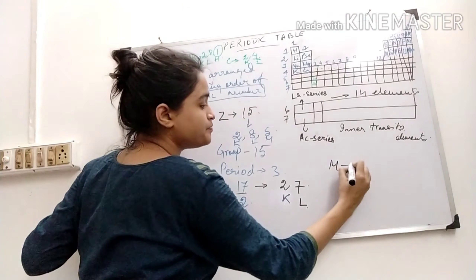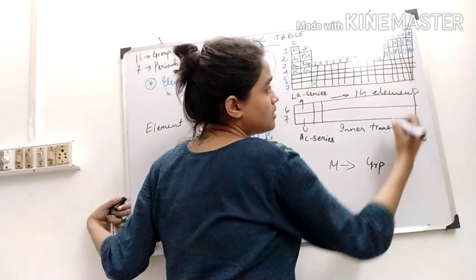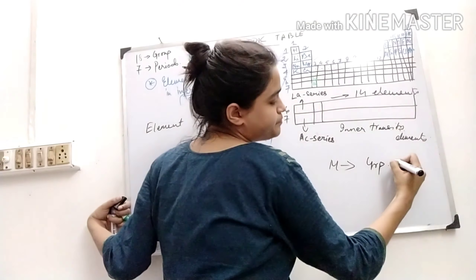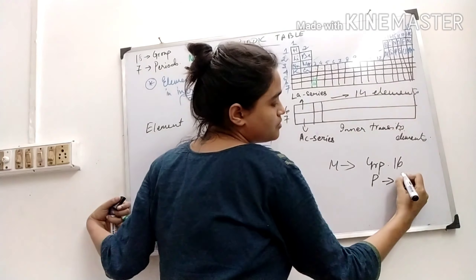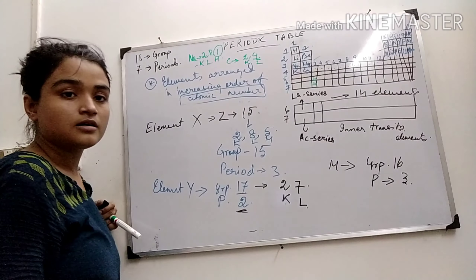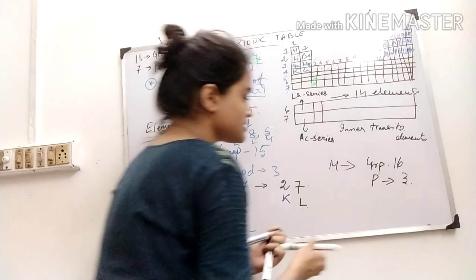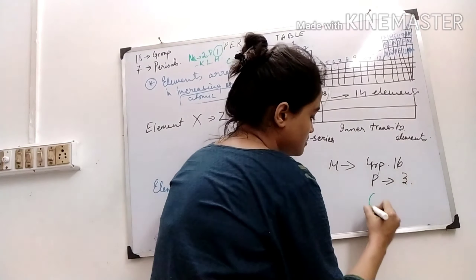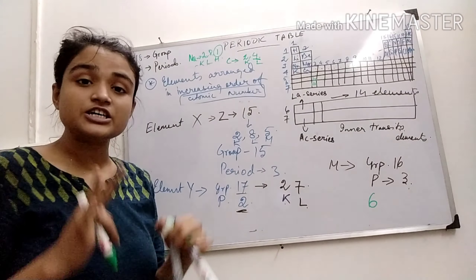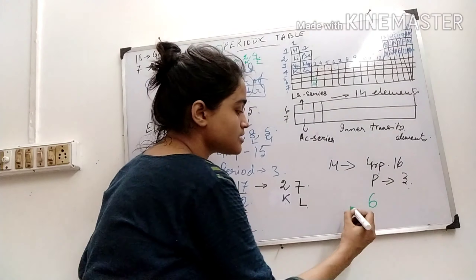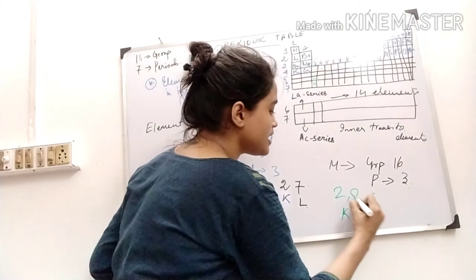Element M has group number 16, period 3. That means its valence electron is 6, and period 3 means 3 shells — K, L, M — including this 6. So the configuration is 2, 8, 6.